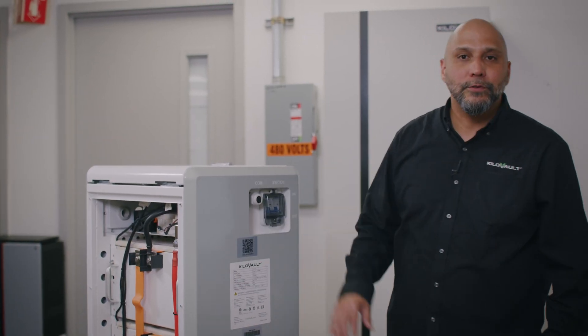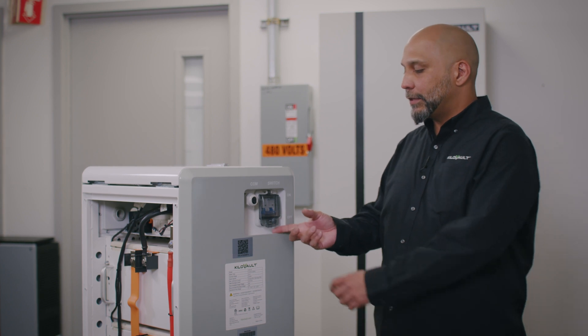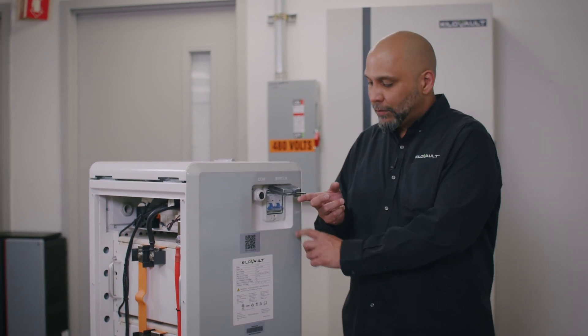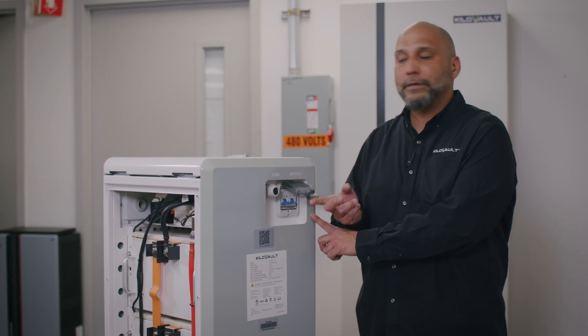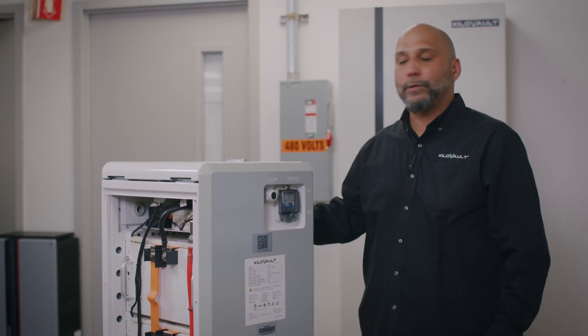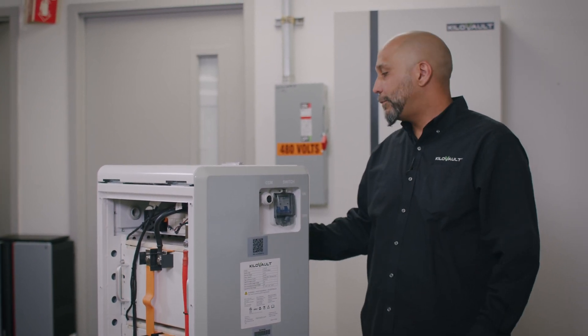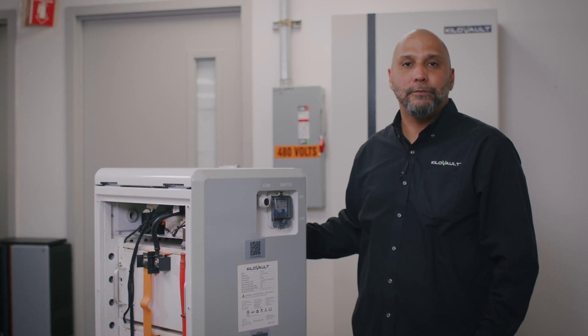Before we get into removing the modules, we're going to make sure that this unit is properly shut down. We're going to make sure that the DC breaker is in the off position and that the digital display on the unit is off by pressing and holding the power button for five seconds.